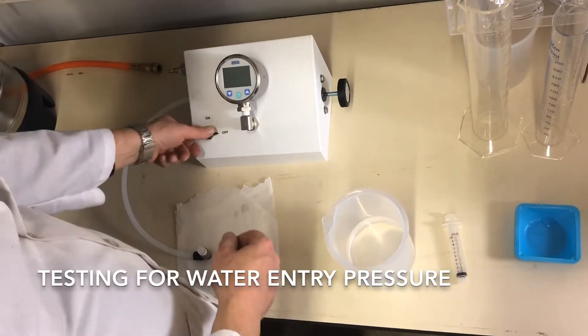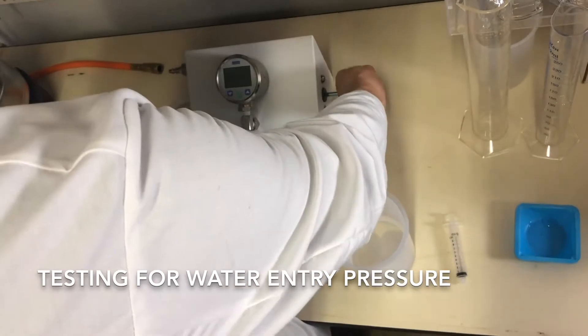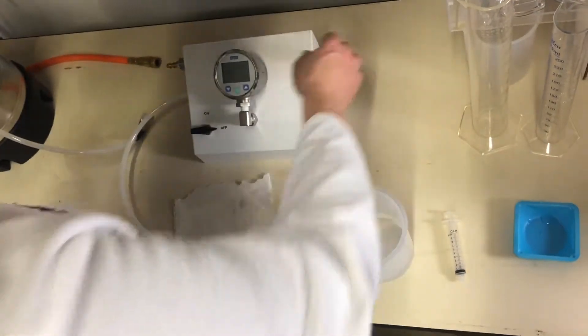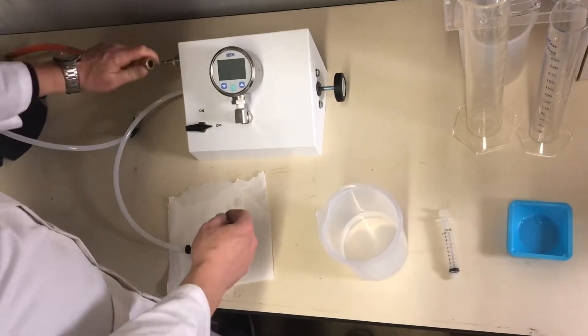We'll verify the valve is off. Make sure the knob is screwed out counterclockwise efficiently. We'll attach the airline.